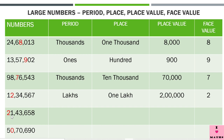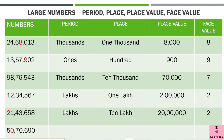Let us read the next number: 21 lakh 43,658. Here 2 has been highlighted. This 2 is also in the lakhs period, like the previous example, but its place is 10 lakhs. So its place value is 20 lakh — because 2 times 10 lakh equals 20 lakh. Its face value is 2. Period: lakhs. Place: 10 lakh. Place value: 20 lakh. Face value: 2.